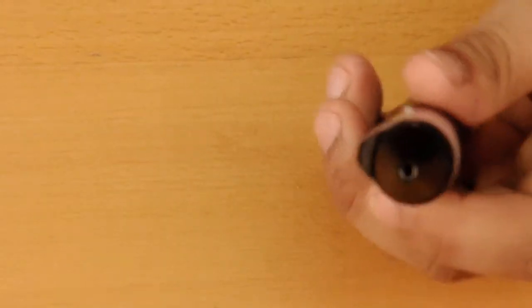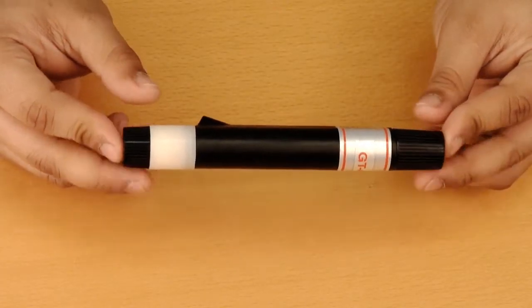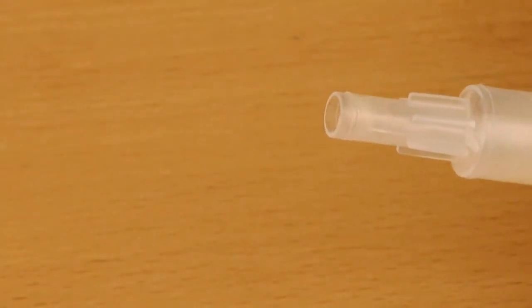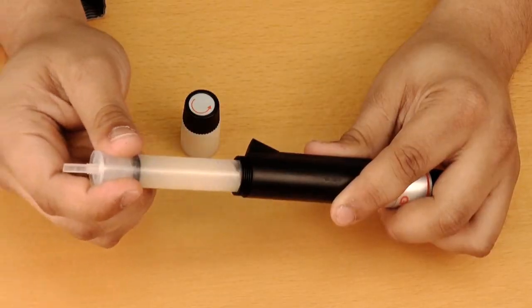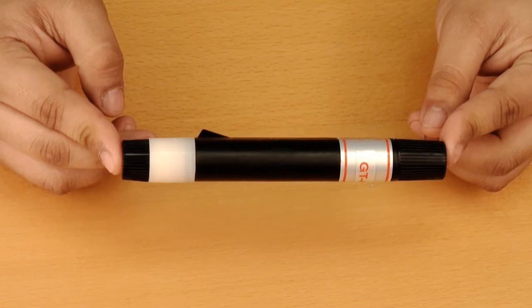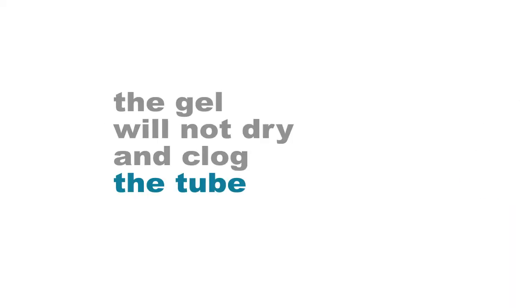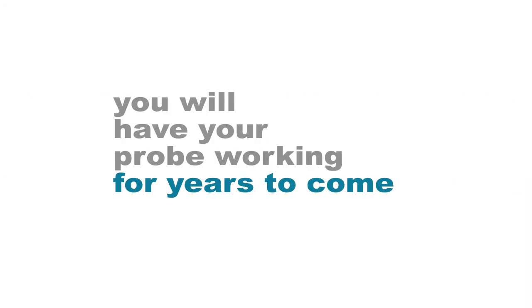You can also use a jewelry steam cleaner to clean the probe for better results. When you are ready to use your tester again, you need to remove and save the tube cap. Insert the gel tube and the tester is ready. This way the gel will not dry and clog the tube and you will have your probe working for years to come.